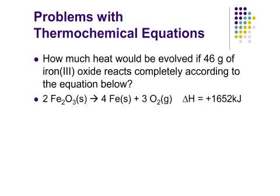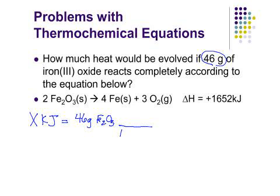All right, let's look at some problems. How much heat would be involved if 46 grams of iron(III) oxide reacts completely according to the equation below? What kind of problem is this? Endothermic reaction. But what kind of process will we use to solve it? Stoichiometry. Factor label. All right, so we will say x kilojoules equals 46 grams of Fe2O3. So I need to go from grams to moles. What will I use to do that? The GFM? Molar mass, which is 159.7 grams per mole of Fe2O3.